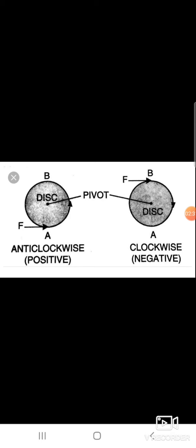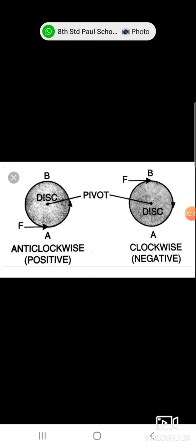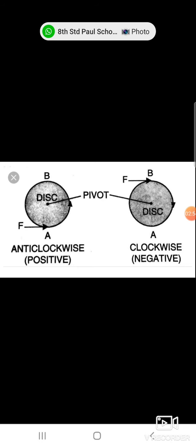Force can be anticlockwise or clockwise. Anticlockwise moment is taken as positive and clockwise moment is taken as negative. The pivot is that particular point about which rotation occurs. Anticlockwise is positive and clockwise is negative — this is called the anticlockwise moment of the force.